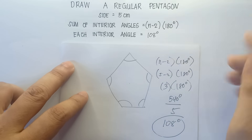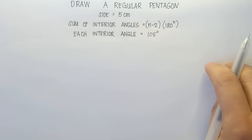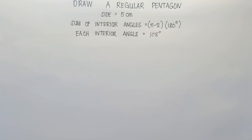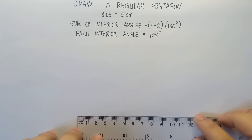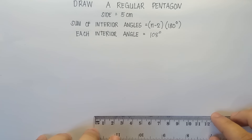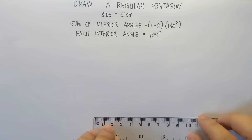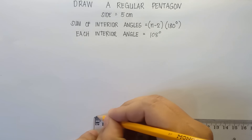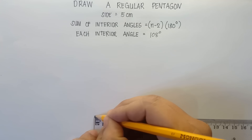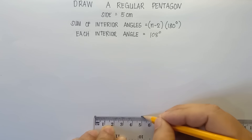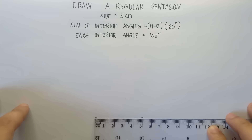Alright, so once you have the measure of each interior angle, we can now draw the regular pentagon. First step: draw a horizontal line that is 5 cm. So this will be our line segment — 5 cm — with an endpoint on each side. We have our first side, that is 5 cm.